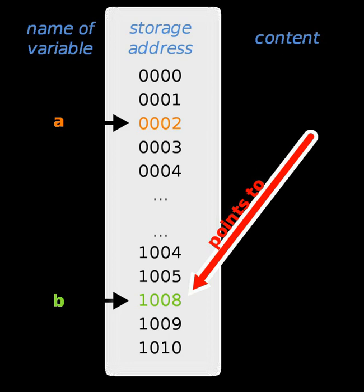Pointers are used to pass parameters by reference. This is useful if the programmer wants a function's modifications to a parameter to be visible to the function's caller. This is also useful for returning multiple values from a function. Pointers can also be used to allocate and deallocate dynamic variables and arrays in memory. Since a variable will often become redundant after it has served its purpose, it is a waste of memory to keep it, and therefore it is good practice to deallocate it when it is no longer needed. Failure to do so may result in a memory leak where available free memory gradually, or in severe cases rapidly, diminishes because of an accumulation of numerous redundant memory blocks.